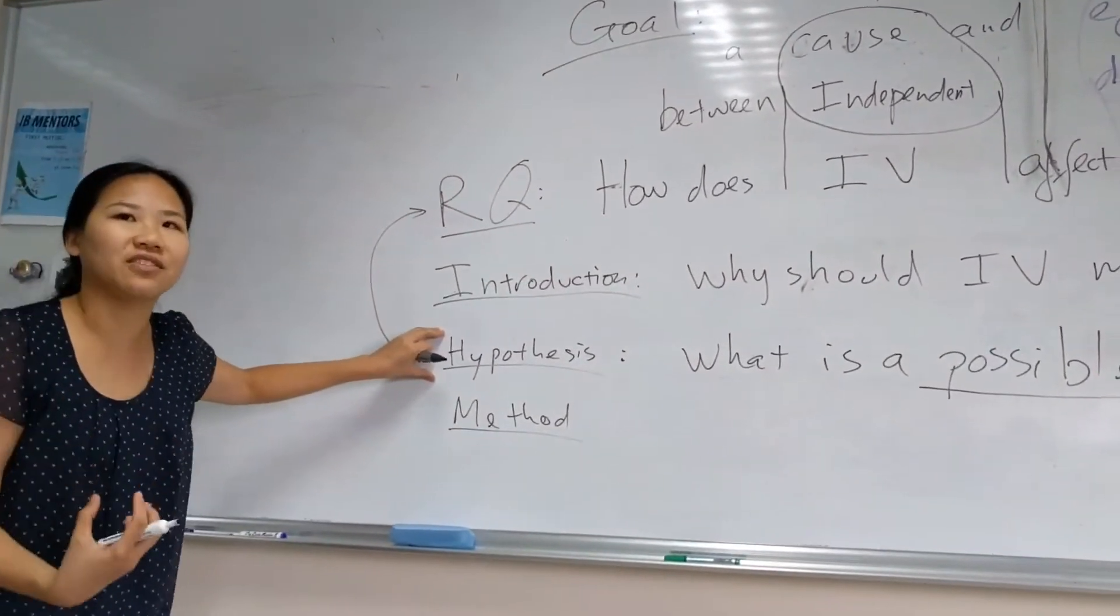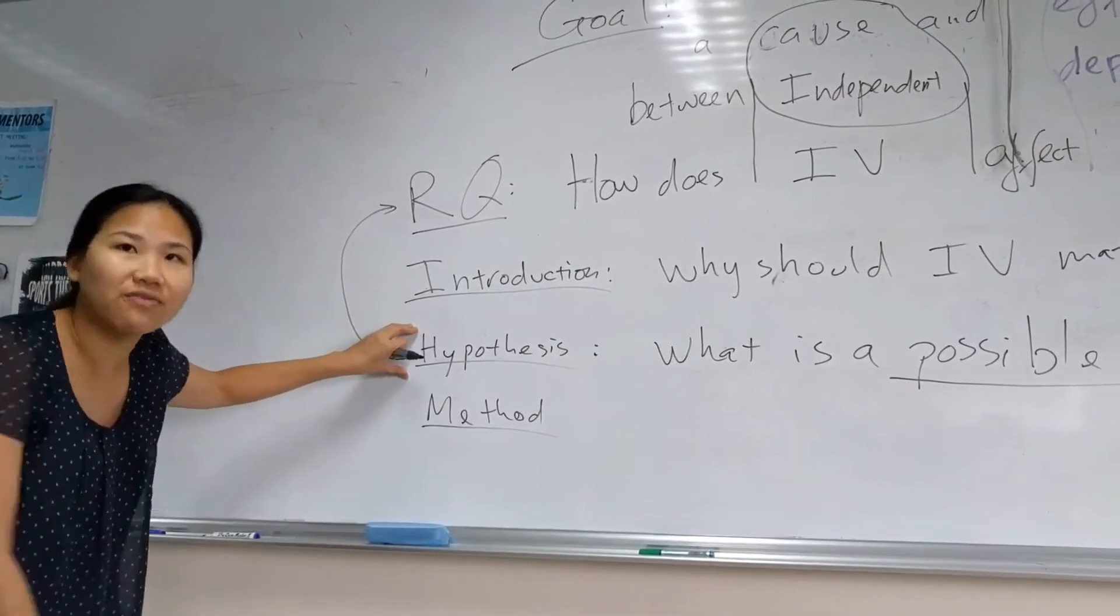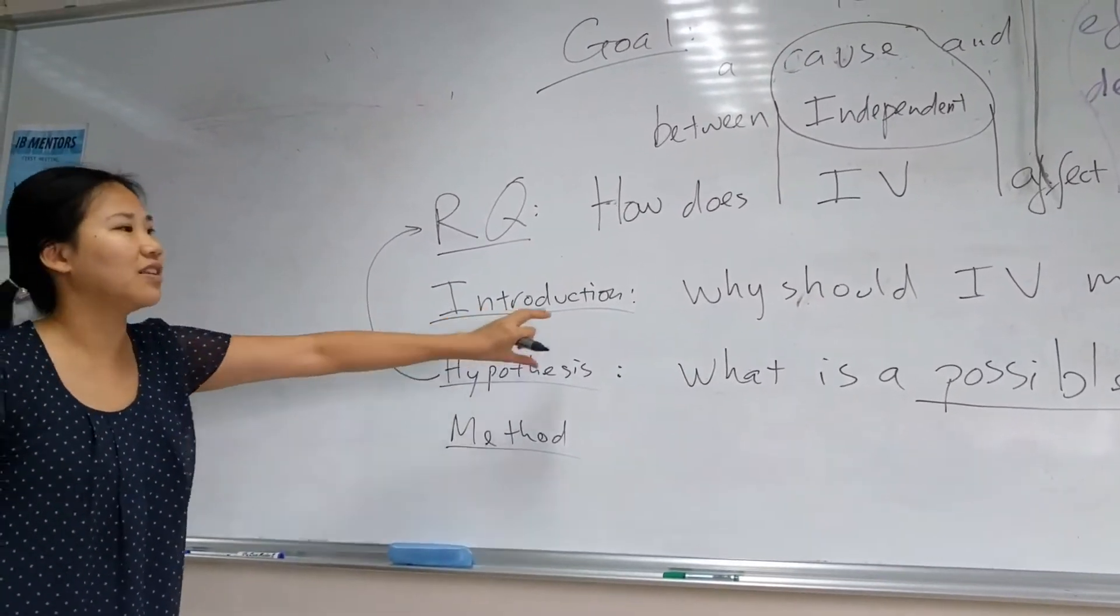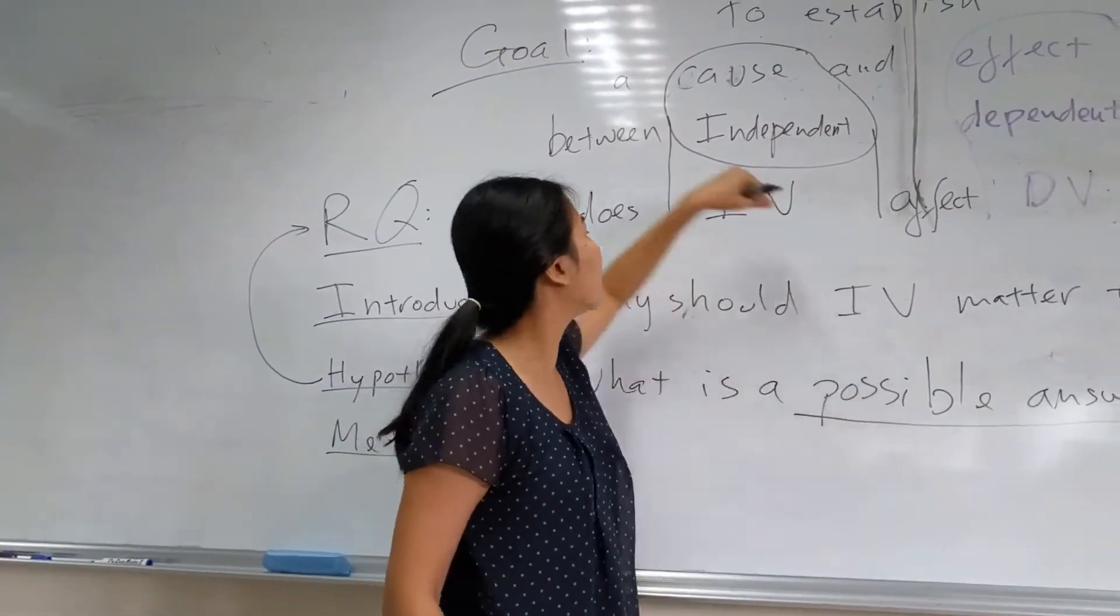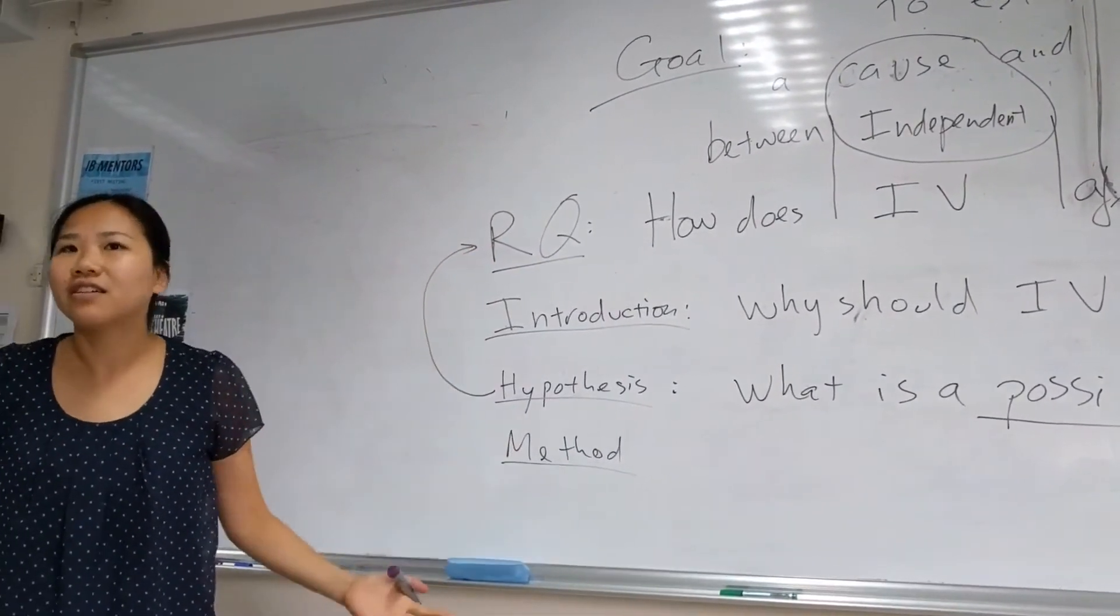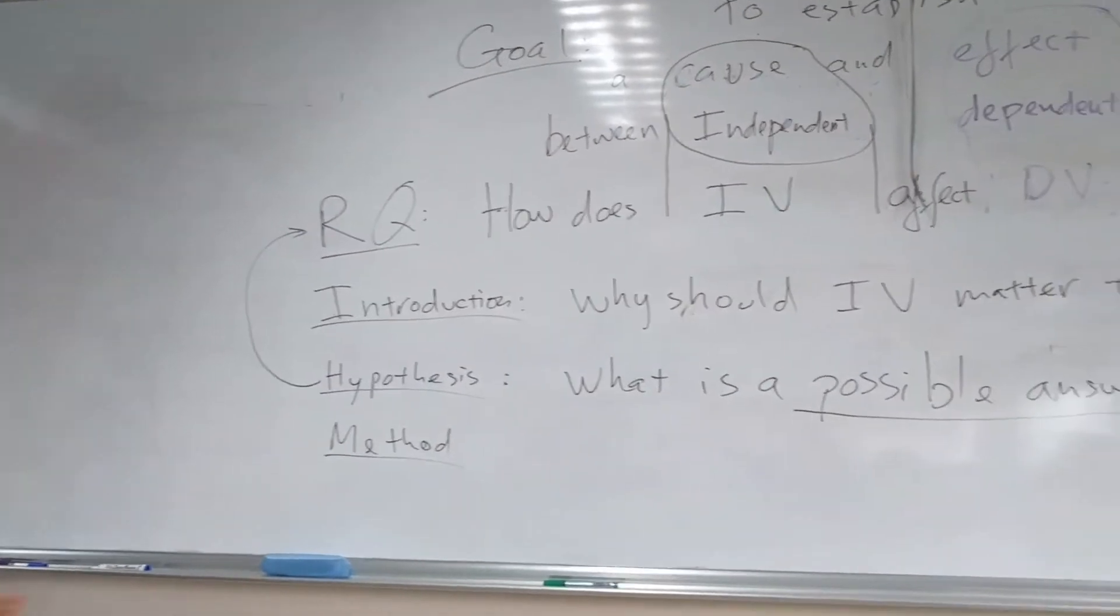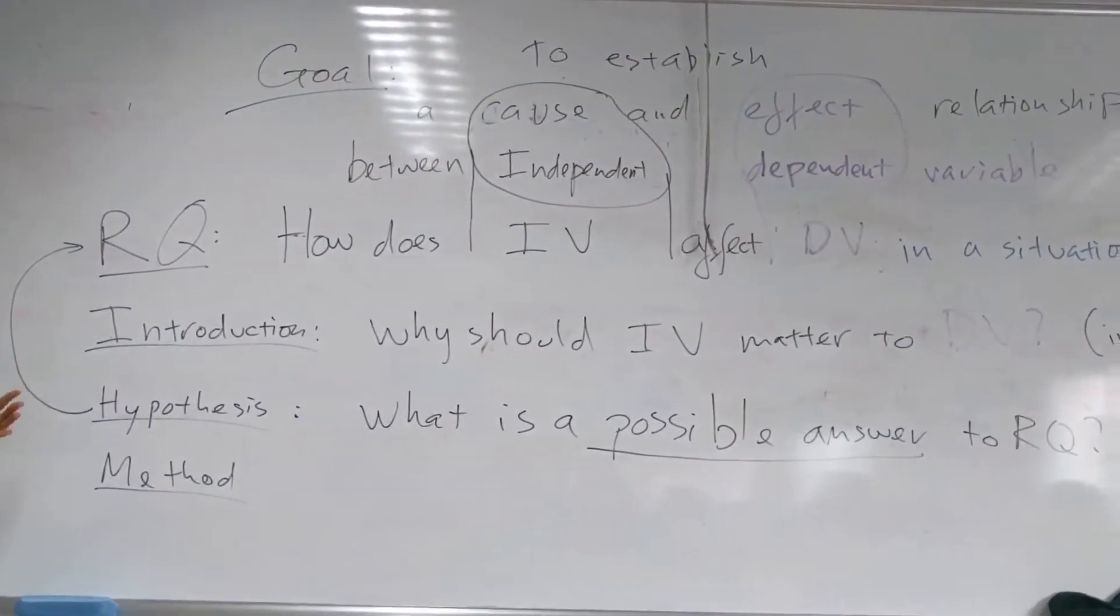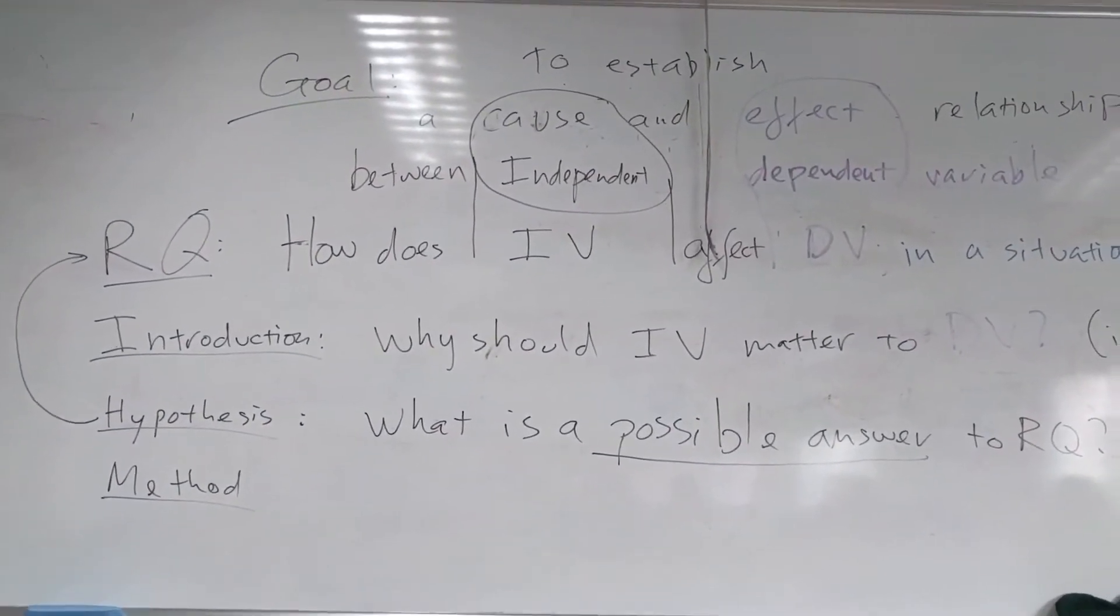Hypothesis is a prediction. You predict it before you even do the experiment. You think that this is a possible answer to the research question. You can be wrong and nobody cares. It's okay to be wrong in the hypothesis because you haven't done the experiment yet.